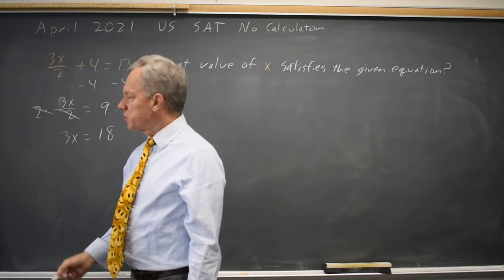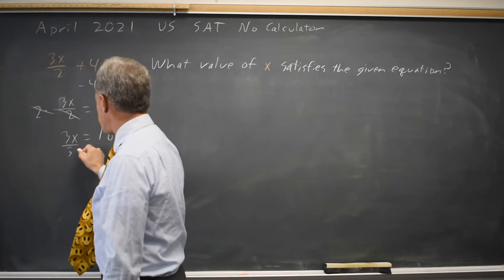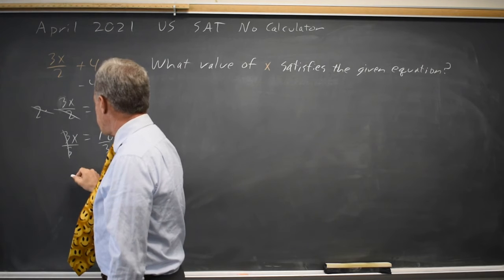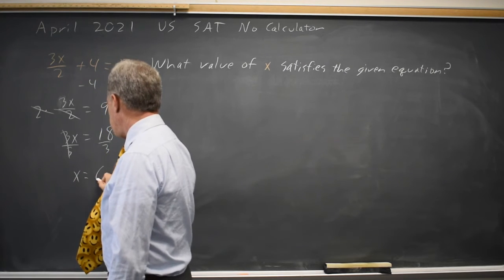To get x by itself, since it's multiplied by 3, I'll divide both sides by 3. And 3 over 3 is 1, so x equals 18 over 3 is 6.